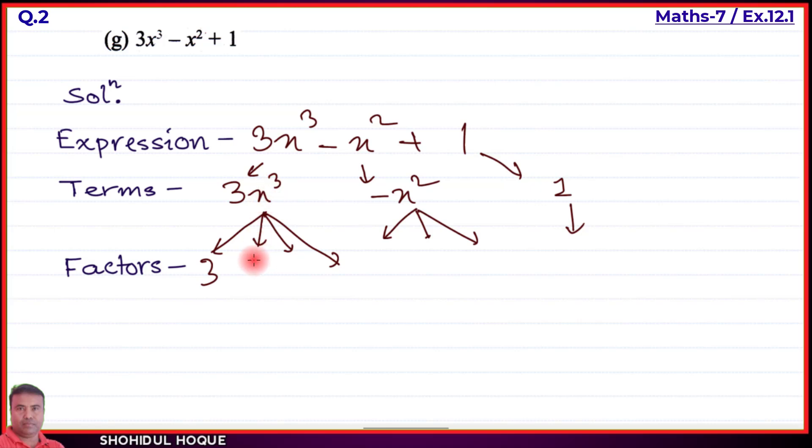The second term -x² has factors -1, x, and x. The third term is 1. Part (g) is complete.